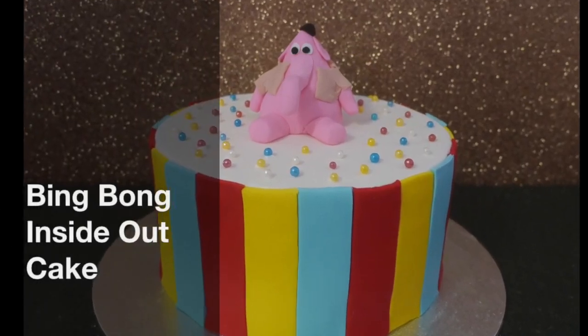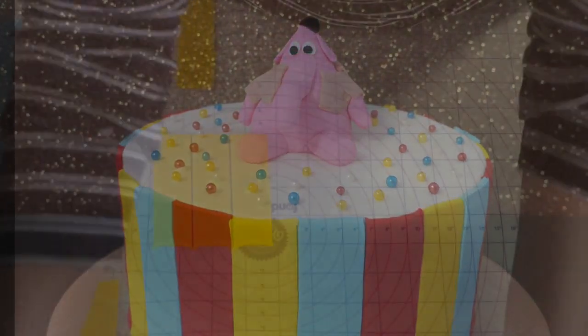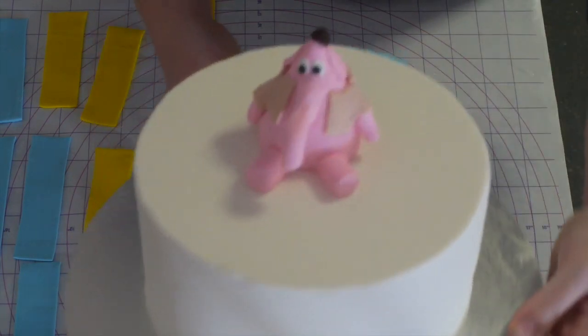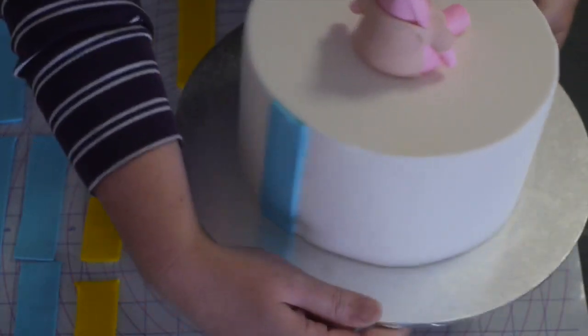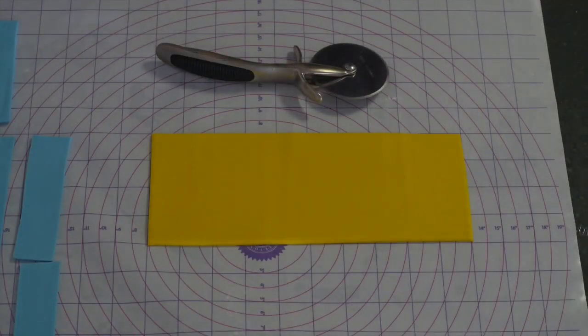Welcome to HodgePodge Australia. Today we are making a Bing Bong Inside Out cake. The first thing you will need is an 8 inch covered cake in white fondant. I have handmade a Bing Bong ornament for the top and I'm just going to show you how to do the stripes on the side. This isn't a very detailed cake tutorial today.